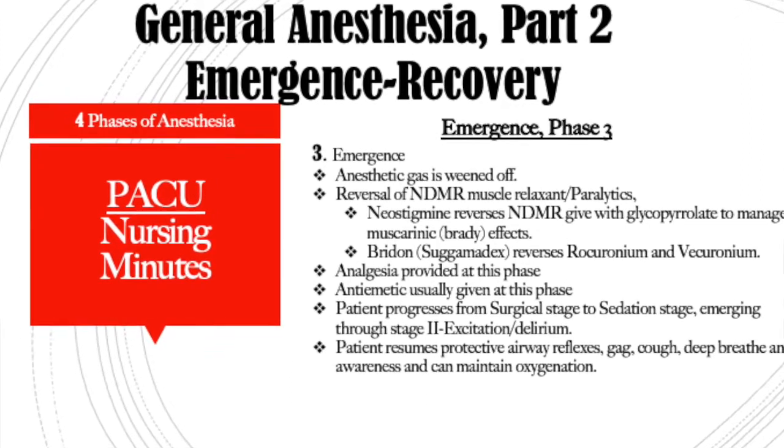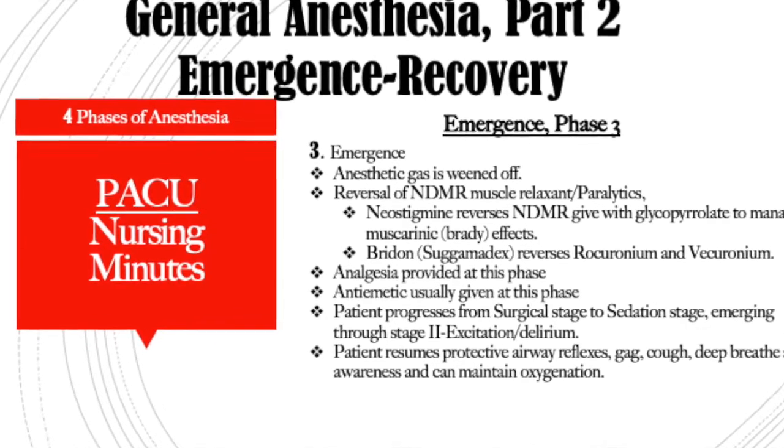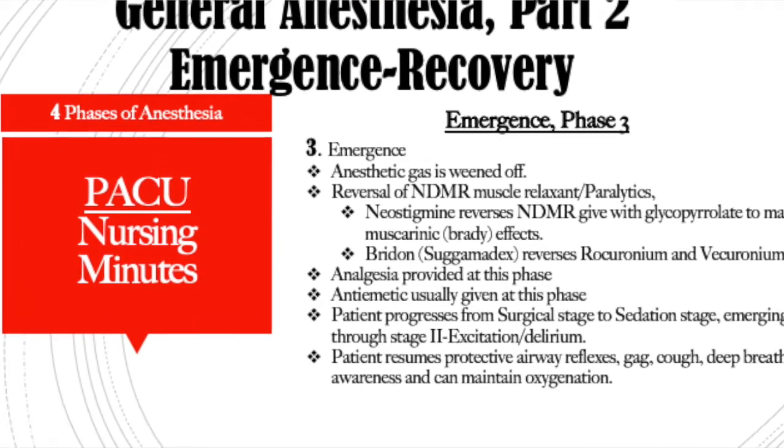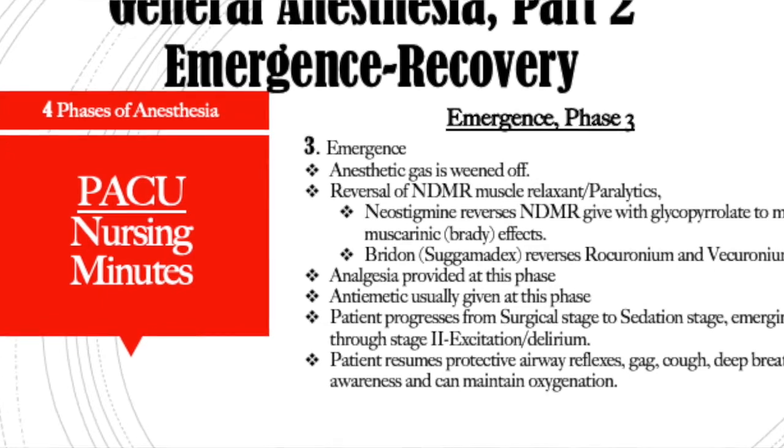The emergence phase, which is phase three of general anesthesia, is when the anesthesia gas is weaned off by the anesthesiologist. They usually do it gradually during the beginning of the closing of the surgery. Then they begin to give reversals for the neuromuscular blocking agents — the paralytics — such as vecuronium and rocuronium, using either neostigmine or sugammadex.